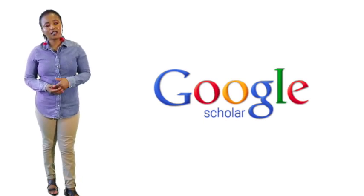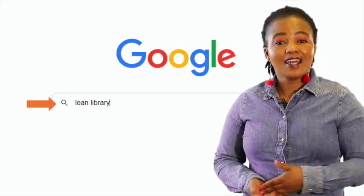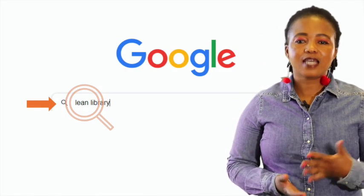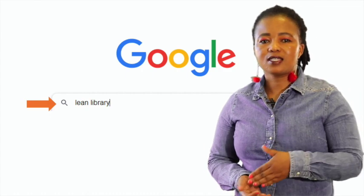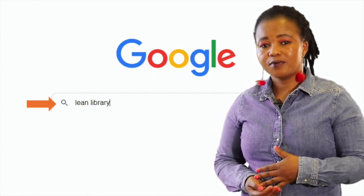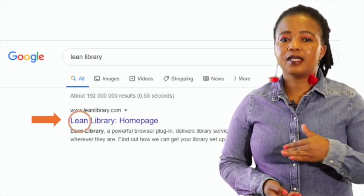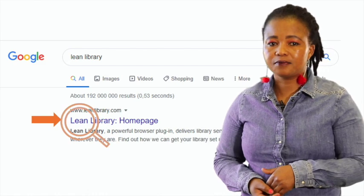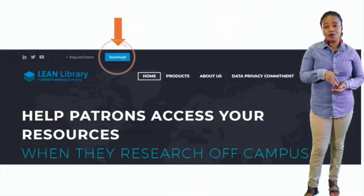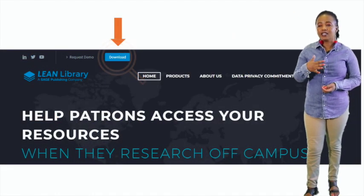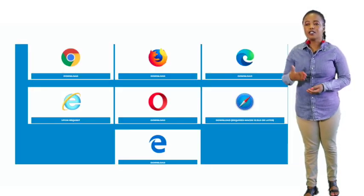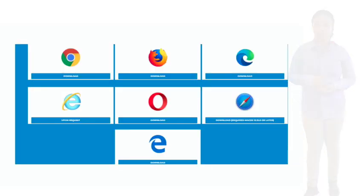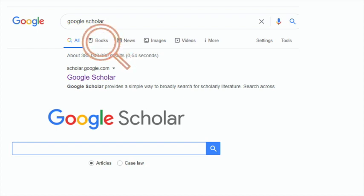These are the steps to follow. In any web browser search bar, type in Lean Library. I use the search engine Google. Click on the Lean Library link, then click on Download. After the Lean Library plugin has been downloaded, it will appear as an add-in. Notice your plugin bar has a Bookstack icon.